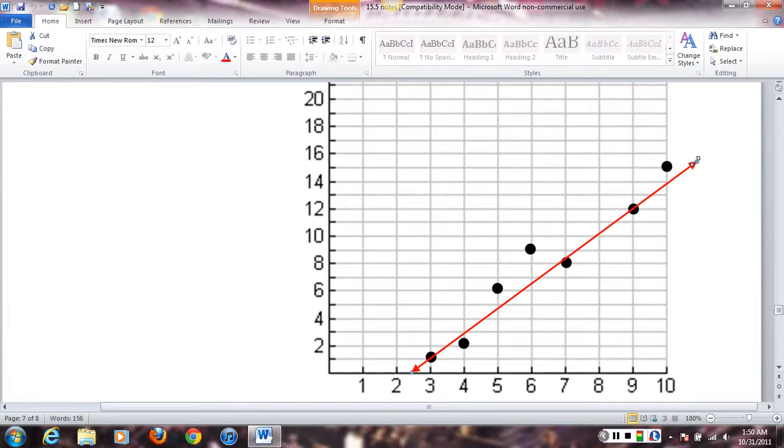A bad choice would be, for example, maybe choosing these. Obviously, I picked two points, but the line misses most of the points in blue. So, I consider that a bad choice. Another bad choice may be these two. Even though I get close to several, I'm missing these three considerably.